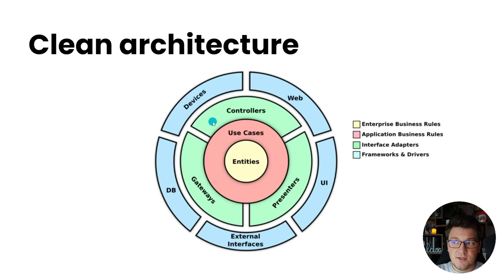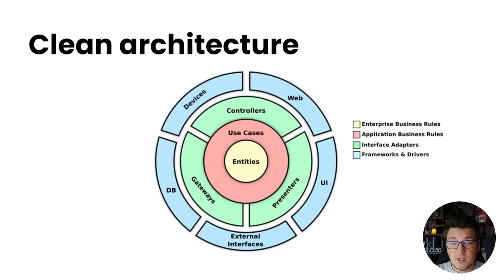On top of the use cases you have your external concerns — these are called controllers, gateways, and presenters — and they represent interface adapters to the use cases. On the outskirts of the clean architecture you have your database, external interfaces, the user interface, and your web API. The same principles present in the onion architecture are also in the clean architecture, especially the direction of dependencies: inner layers aren't allowed to reference outer layers.